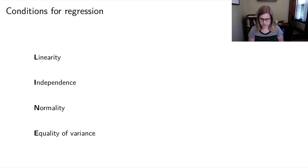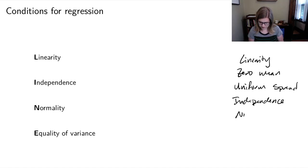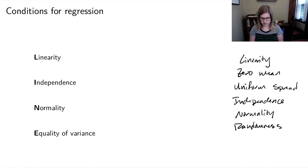The textbook conditions are: linearity, zero mean, uniform spread, independence, normality, and randomness. Those conditions are all contained within my four LINE conditions, but I think mine are easier to remember.